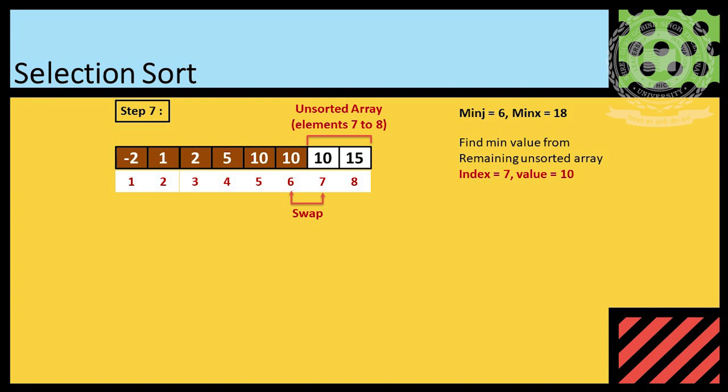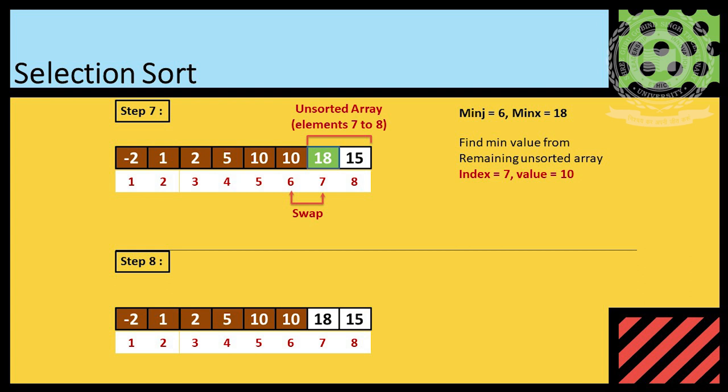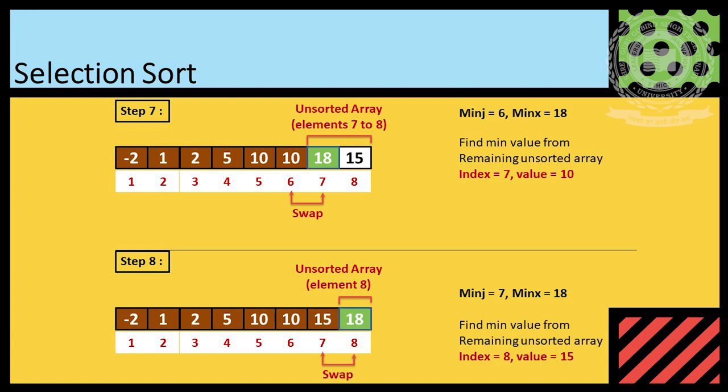Again, we find minimum element from rest of array, that is 10, so we swapped. Again, we find minimum element from rest of array, that is 15, so we swap.